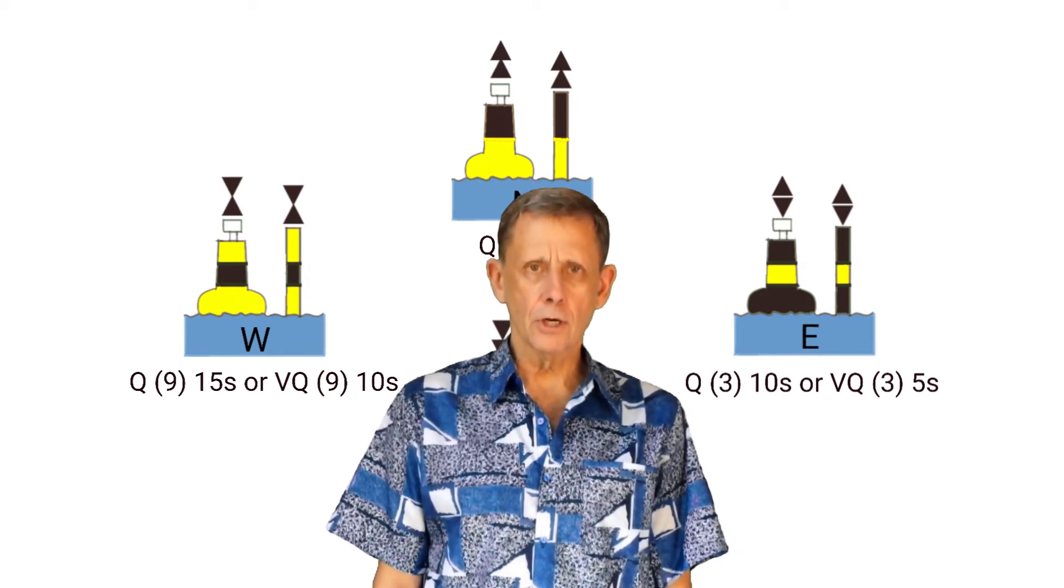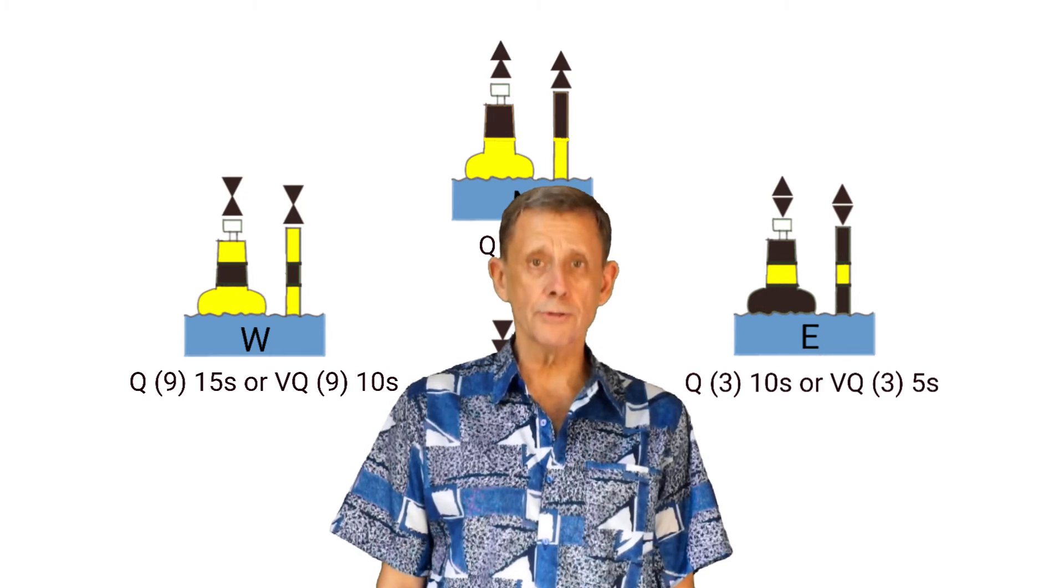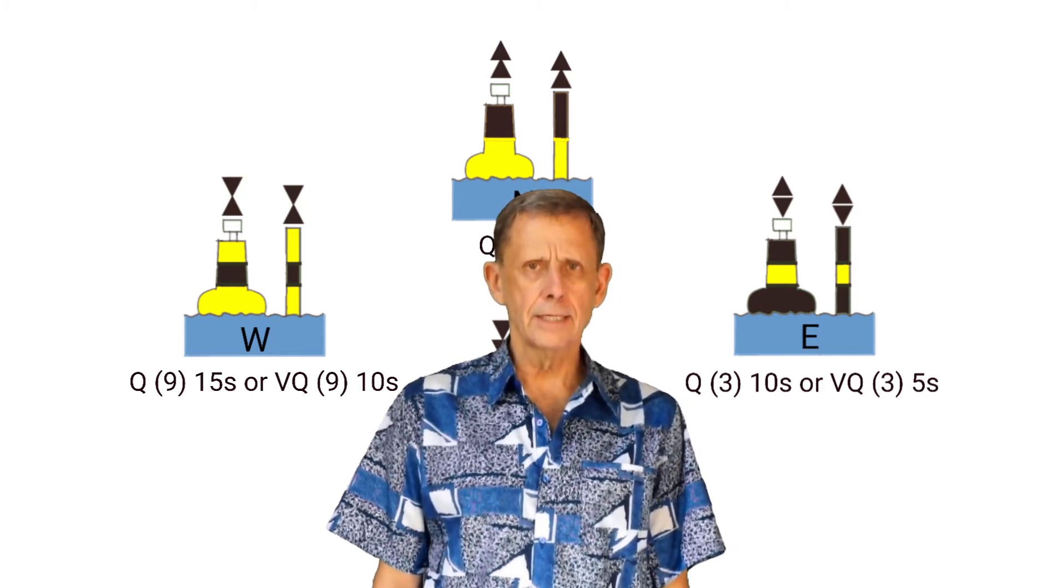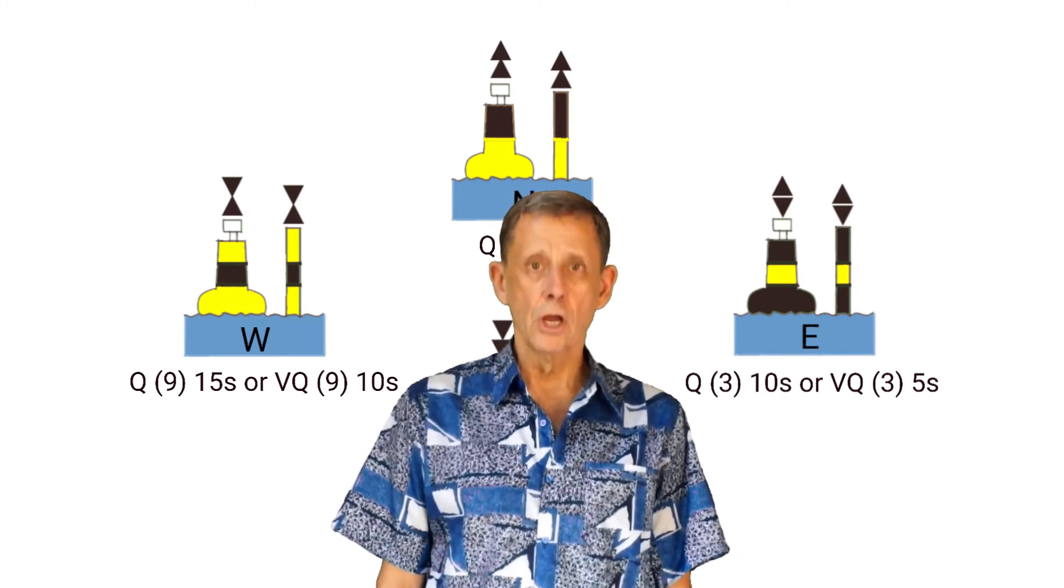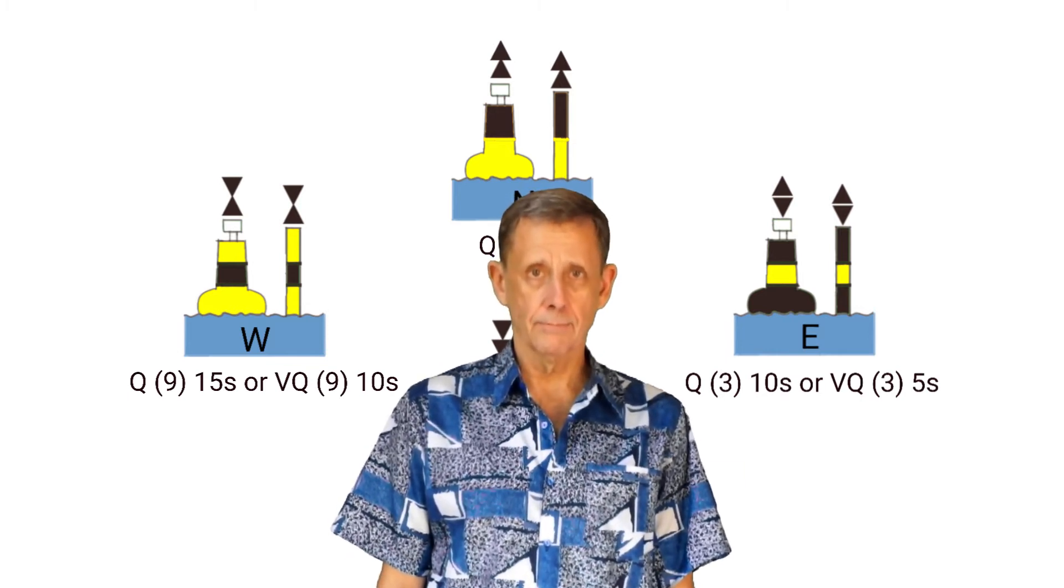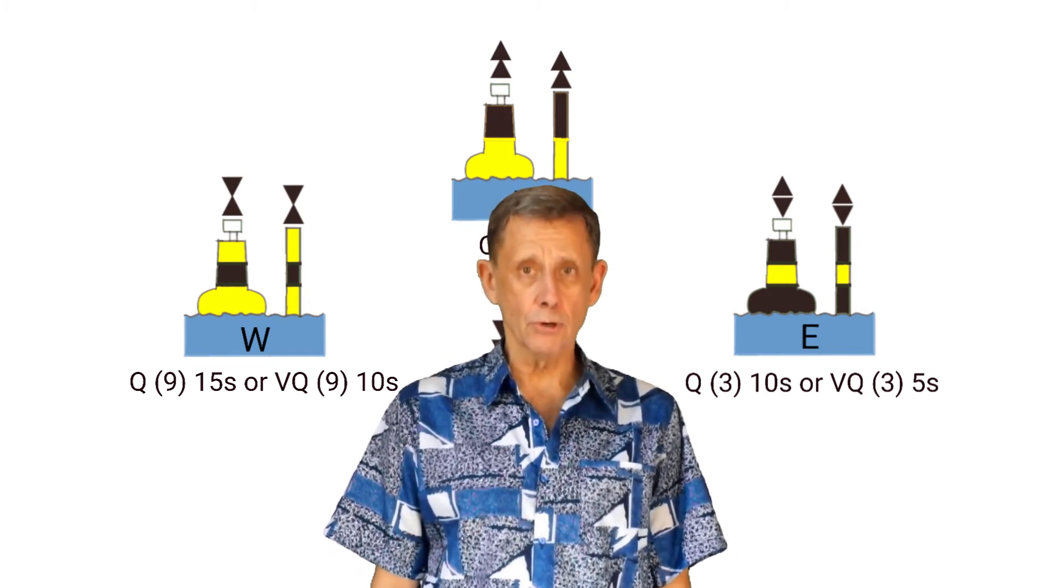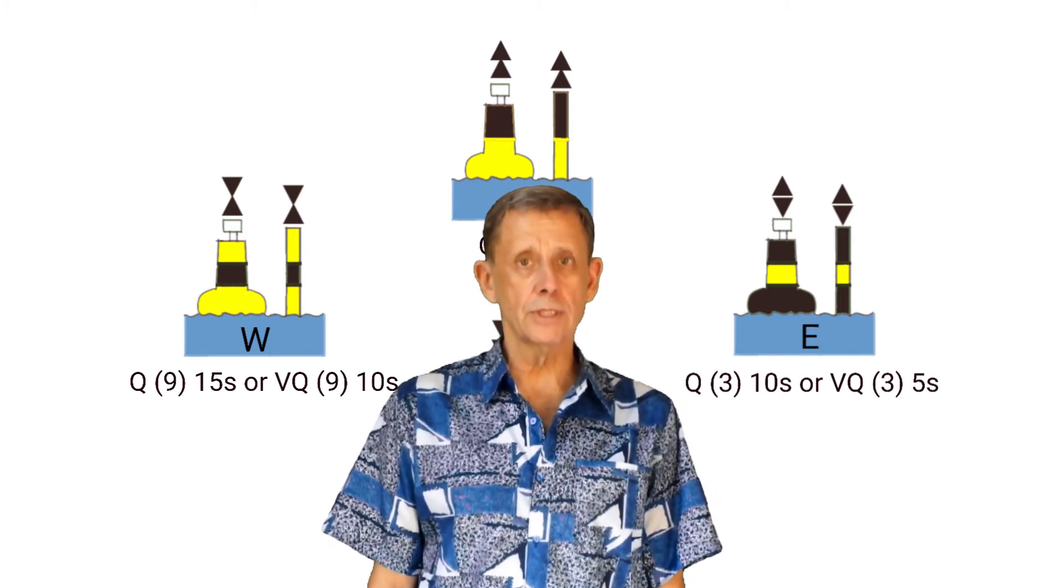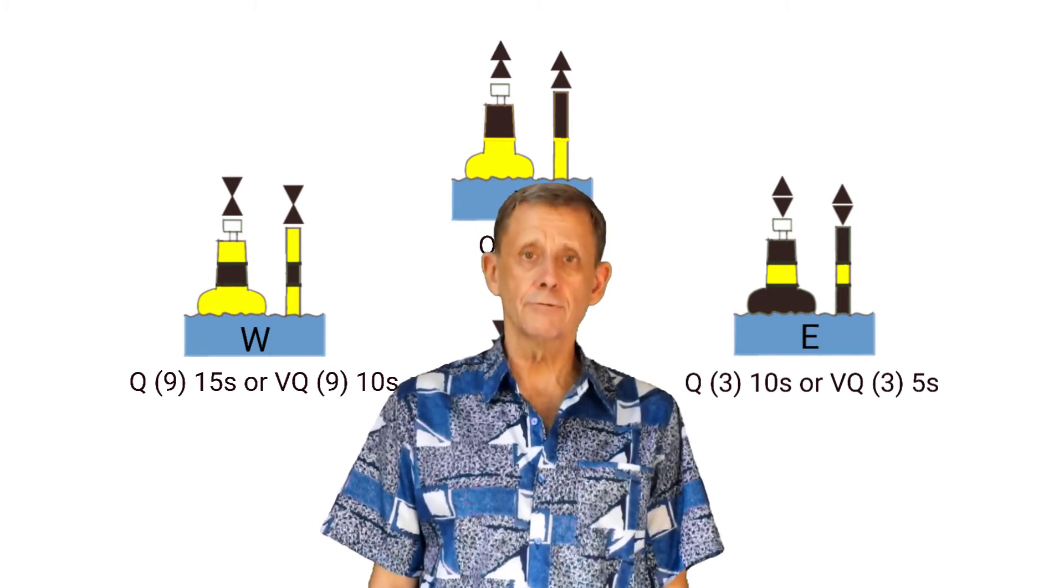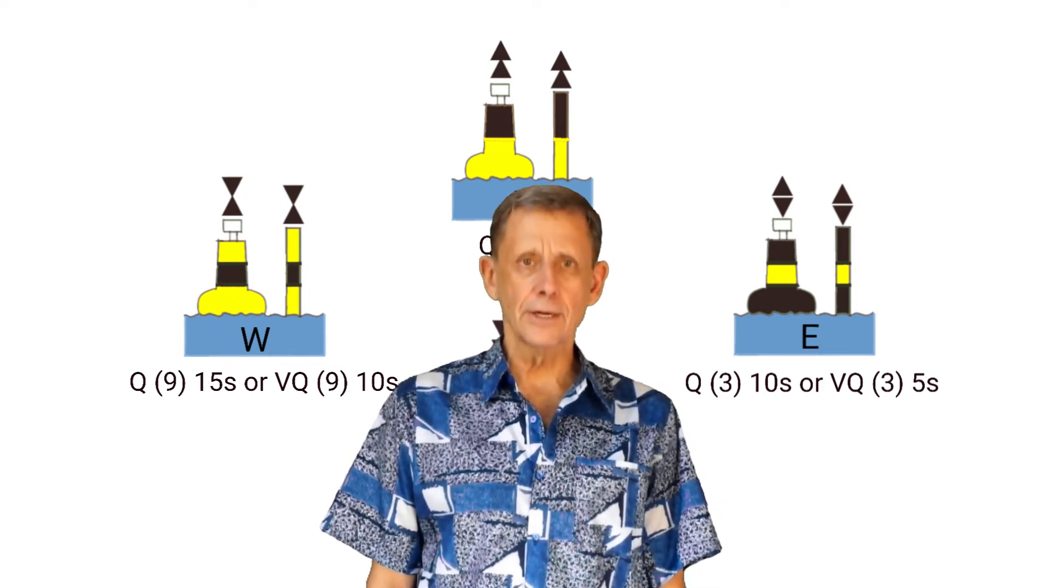A cardinal beacon marks the edge of safe water based on the cardinal directions of north, south, east and west. That is, a cardinal beacon points in the compass cardinal direction towards safe water. So a north cardinal beacon indicates safe water to the north. East, south and west cardinal beacons indicate safe water to the east, south and west, respectively. Let's look at what they look like and how to identify them.